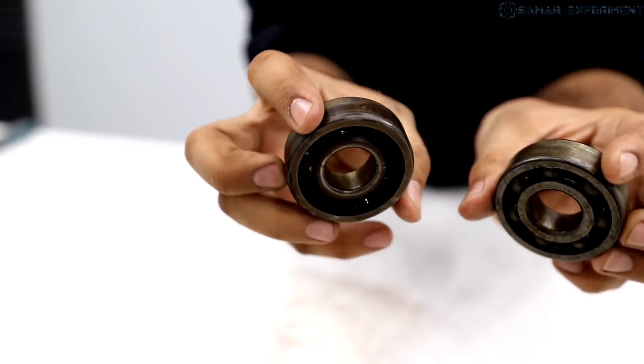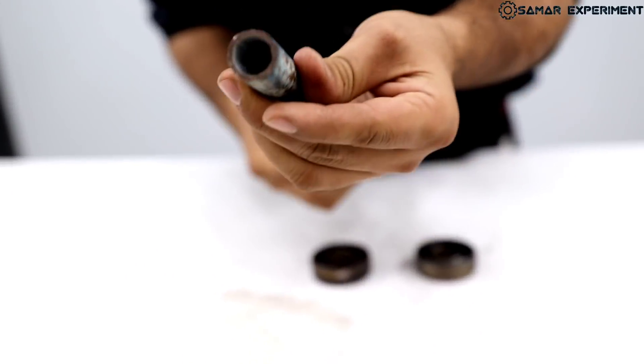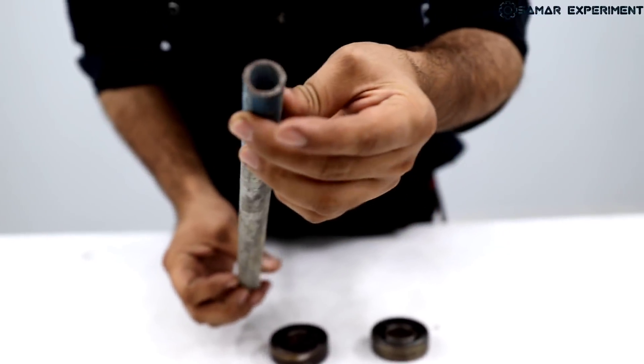So friends, I have taken two bearings in front of you. You can see it. Now, I have thought that I will take some work. Here is a GI pipe, half inch, which is used in tank fitting. Plumber, you will get very easily.